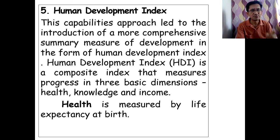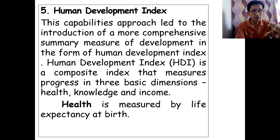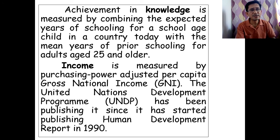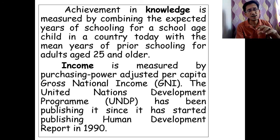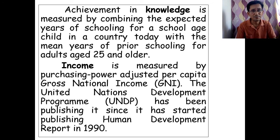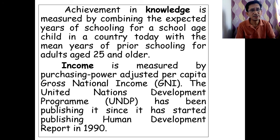Health is measured by expectation of life at birth. Knowledge is measured by combining the expected years of schooling for a school-age child in a country today with the mean years of prior schooling for adults aged 25 and older. Income is measured by the purchasing-power-adjusted per capita gross national income.